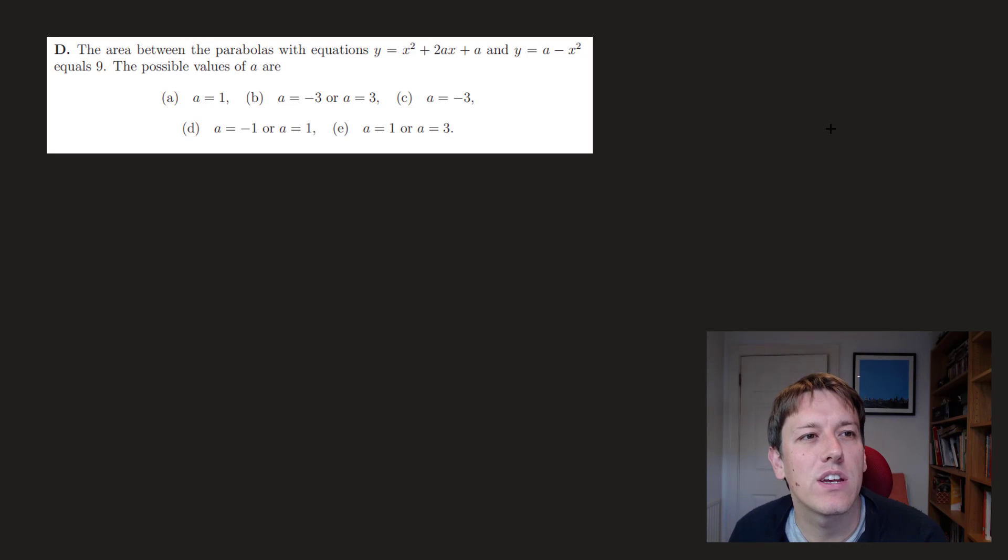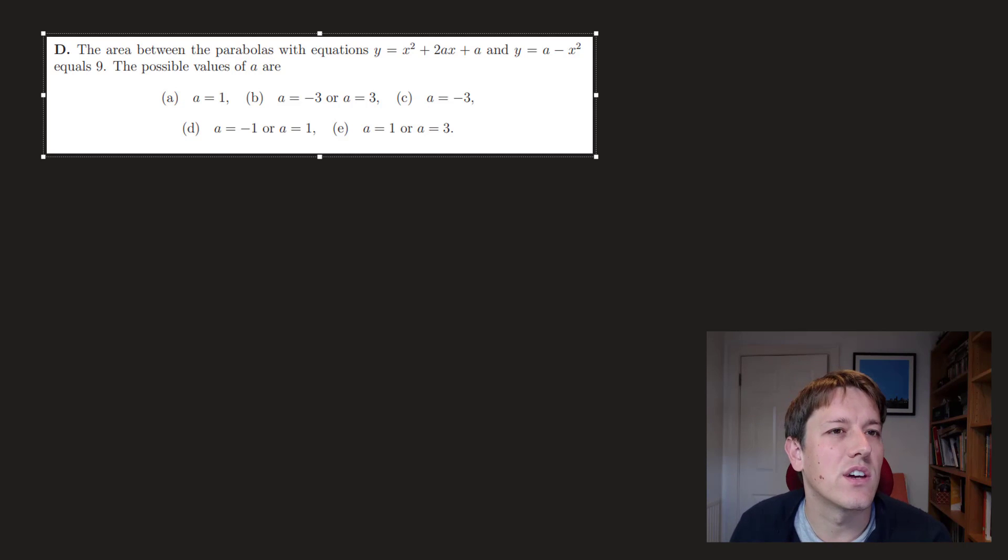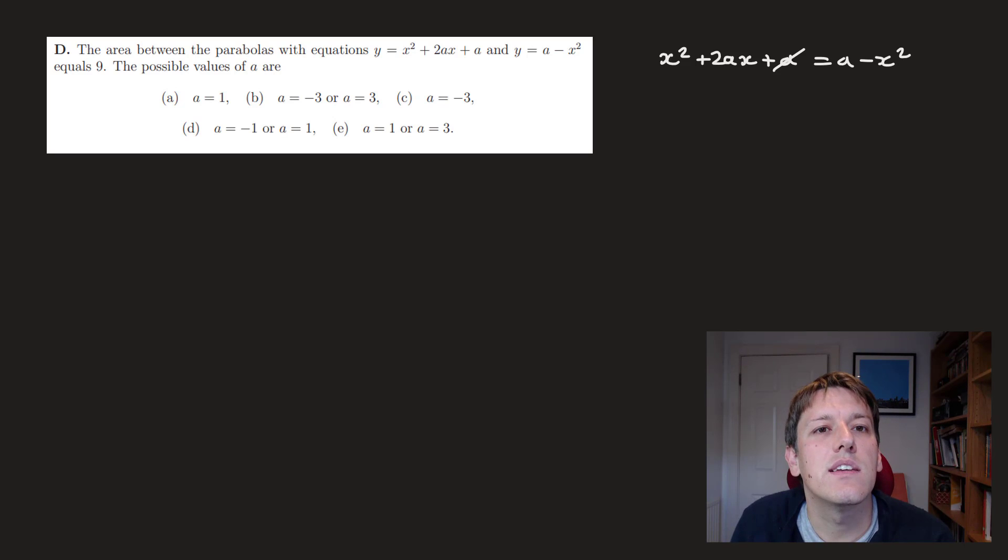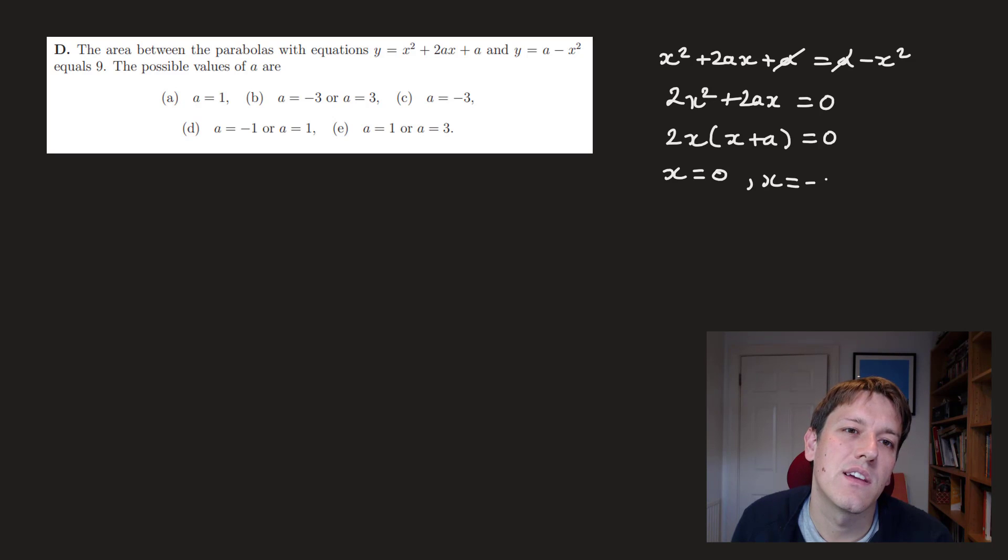So in part D, it says the area between the parabolas with equations y equals x squared plus 2ax plus a and y equals a minus x squared is 9. And we want to know what the possible values of a are. So I think the first thing we would do here is to try and think about a sketch of these curves. And in particular, we're going to want to know where these intersect so we can work out the area between the curves. So they're both in the form y equals something, so they're going to intersect where x squared plus 2ax plus a is equal to a minus x squared. So the a's cancel here, and I get 2x squared plus 2ax equals 0. So I've got 2x times x plus a equals 0. So they intersect where x equals 0 and x equals minus a. And you should then be able to come up with a reasonable sketch of these curves. But there's a slight subtlety in that, because the intersections are 0 and minus a, depending on the sign of a, whether a is positive or negative, that other intersection is going to be either to the left of 0 or to the right of 0.